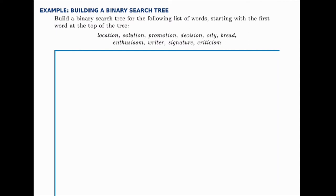Build a binary search tree for the following list of words, starting with the first word at the top of the tree. We're going to order these words alphabetically, meaning in the tree, if a word comes before the current word alphabetically, we'll move to the left. If it comes after it, we'll move to the right.